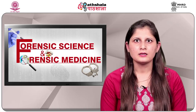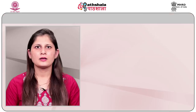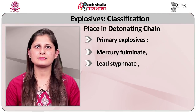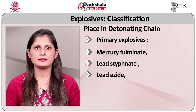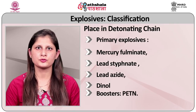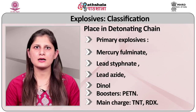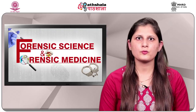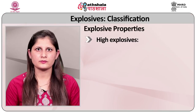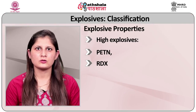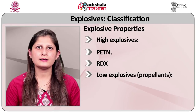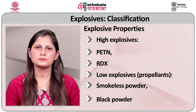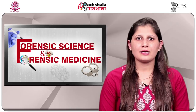According to the place in the detonating chain: primary explosives include mercury fulminate, lead styphnate, lead azide, and tetrazene; boosters include PETN; and main charges include TNT and RDX. According to explosive properties: high explosives include PETN and RDX; low explosives include propellants, smokeless powders, black powder, etc.